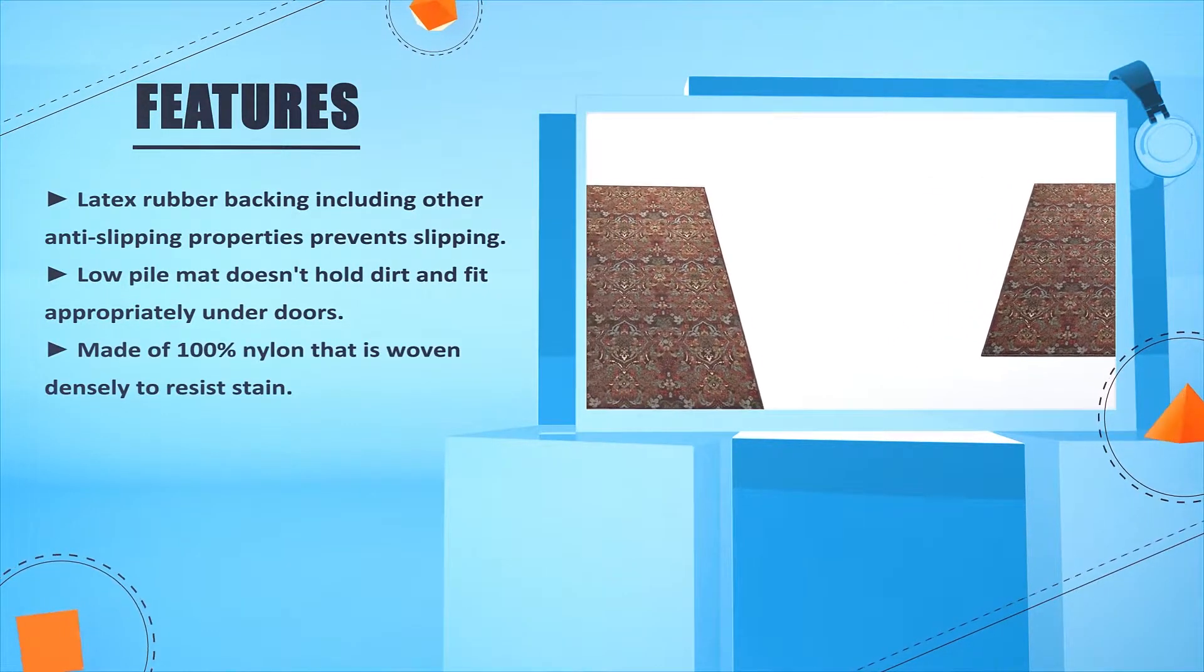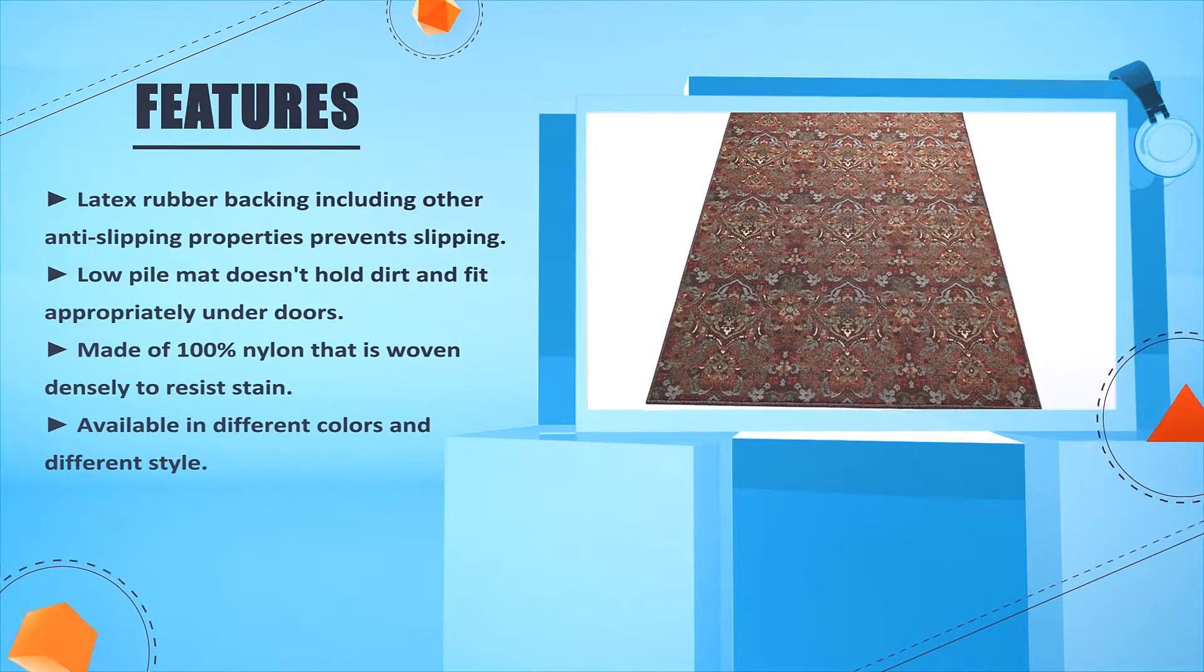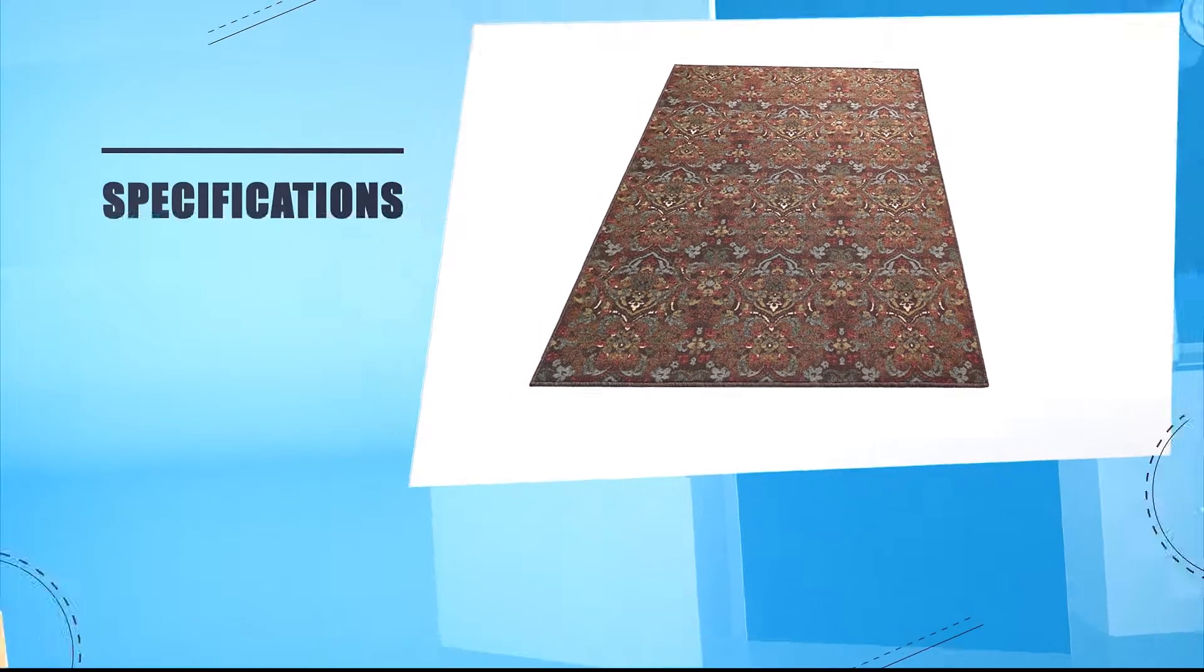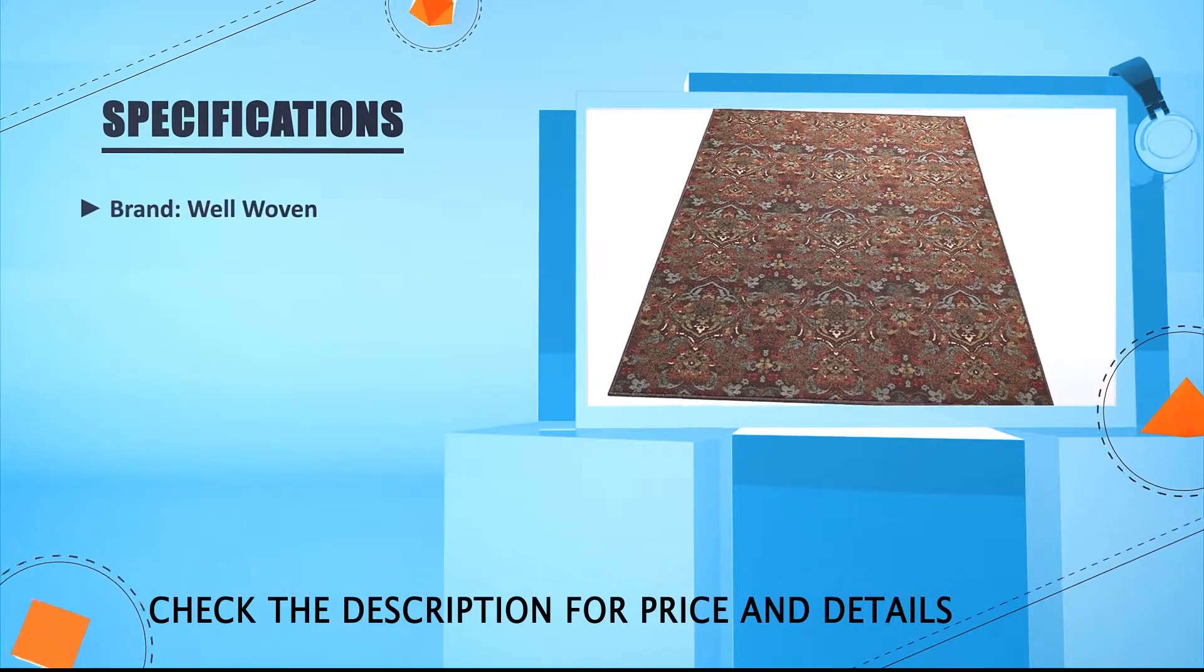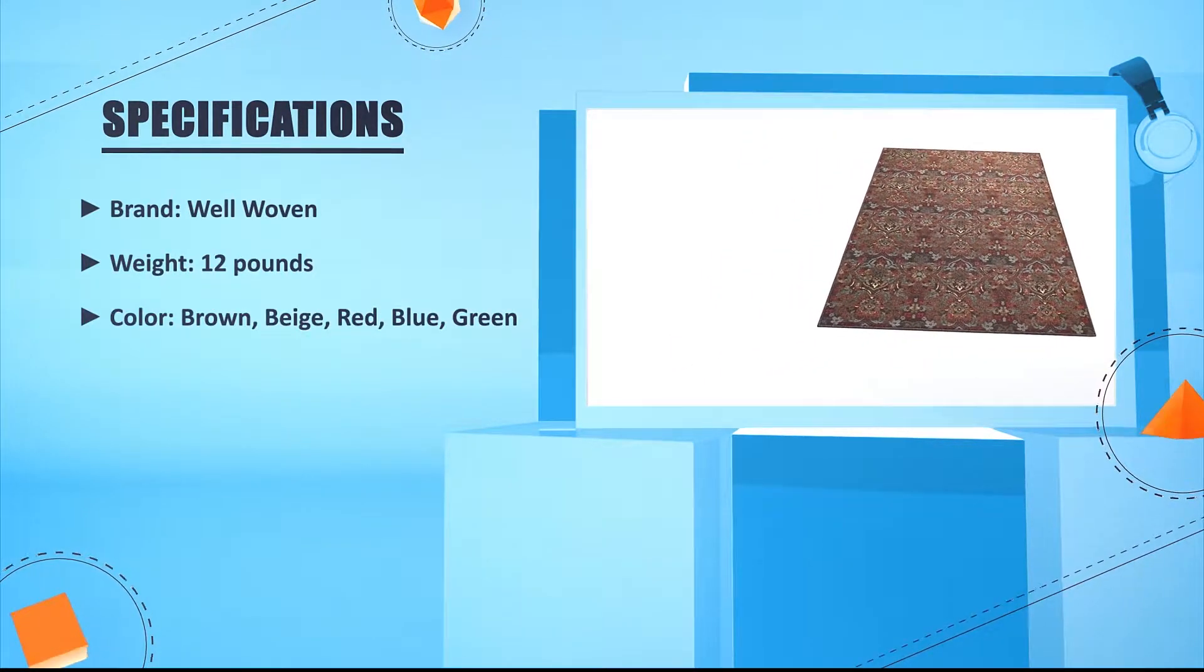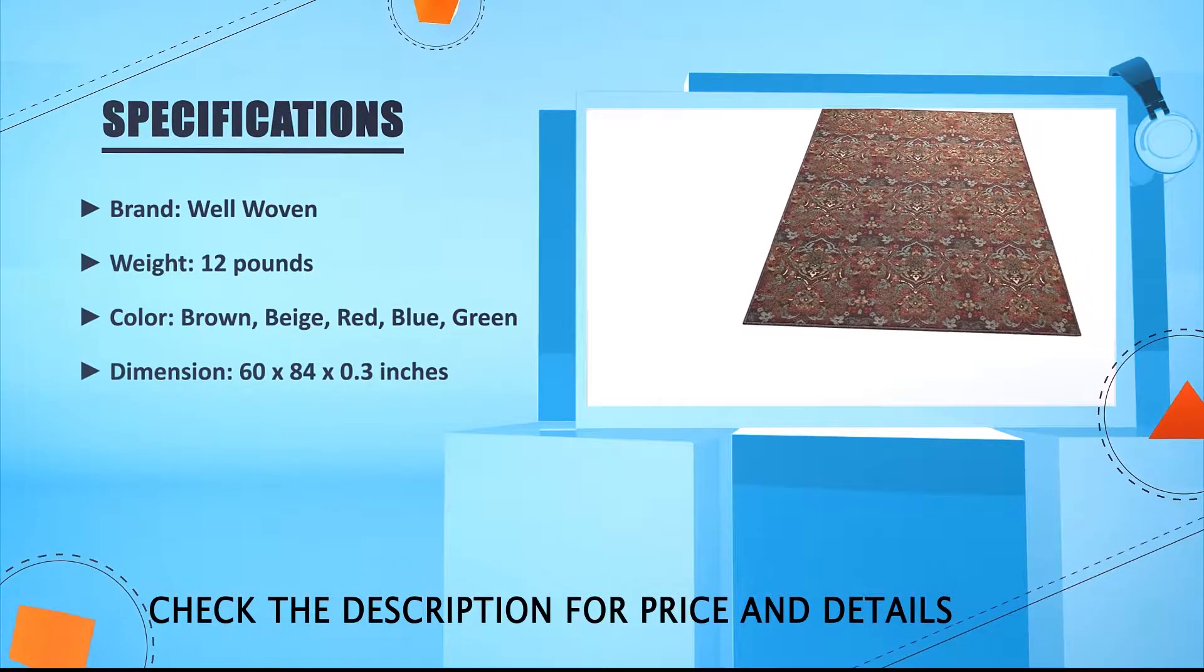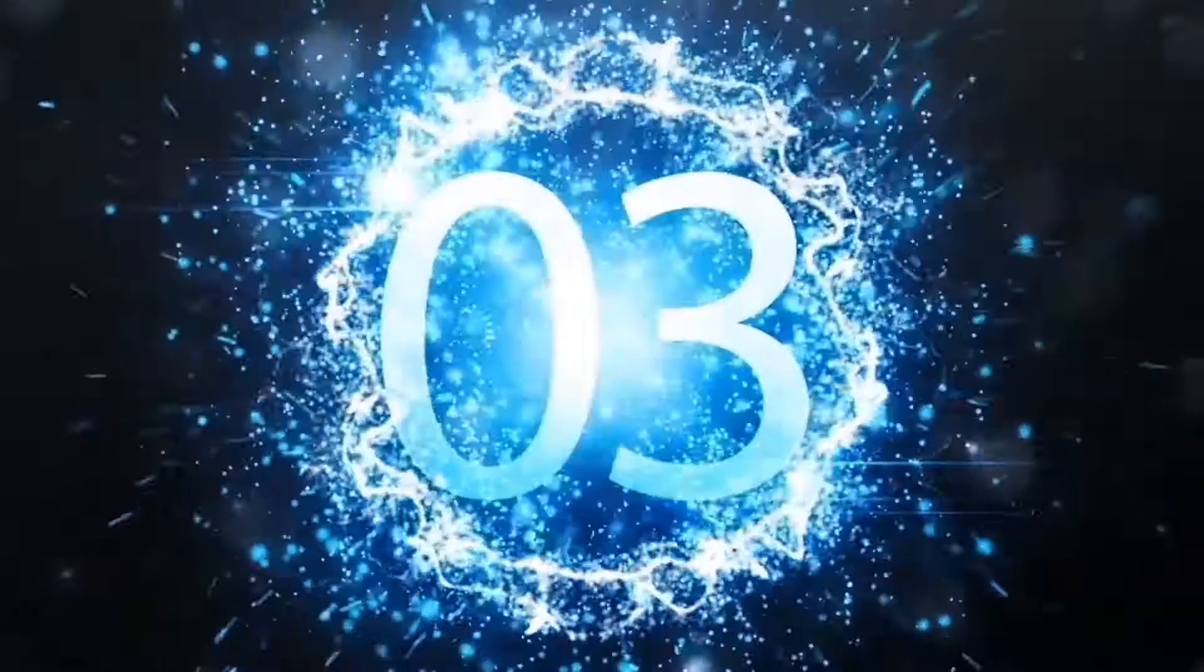Made of 100% nylon that is woven densely to resist stains. Available in different colors and different styles. Brand: Well Woven. Weight: 12 pounds. Color: brown, beige, red, blue, green. Dimension: 60 by 84 inches by 0.3 inches.